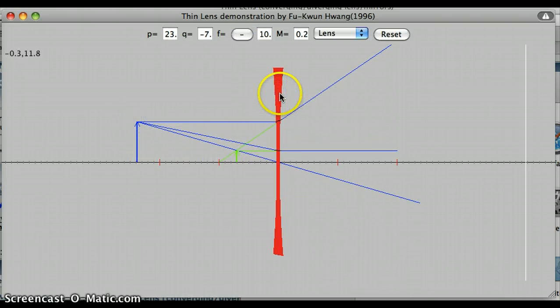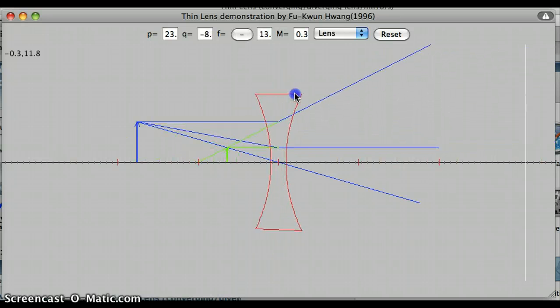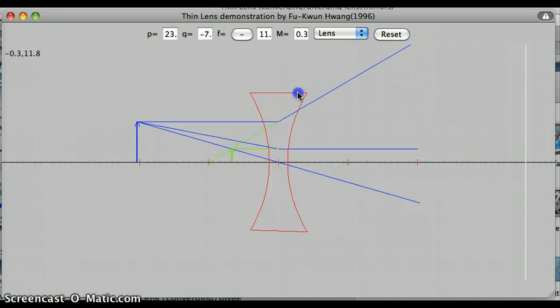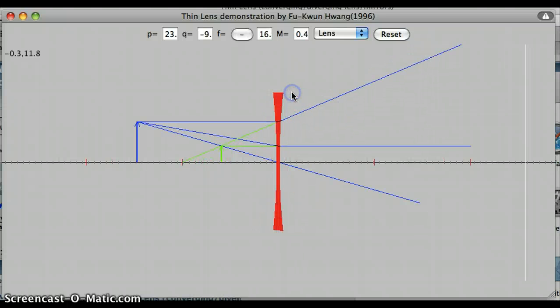You can also change the focal length of the lens. If we just grab the lens and drag it to be fatter or thinner, we can see how the focal length changes. Again, this minus sign means all of these focal lengths are negative numbers.